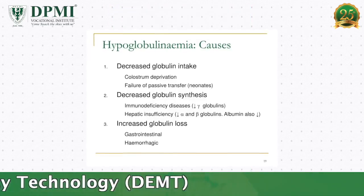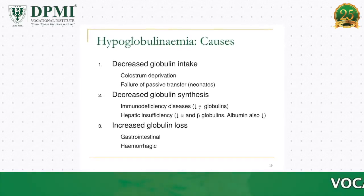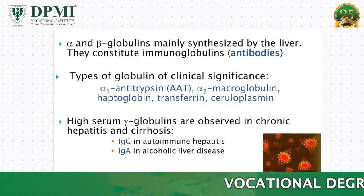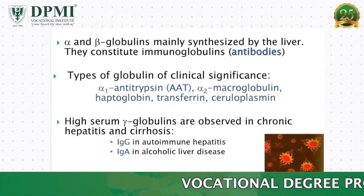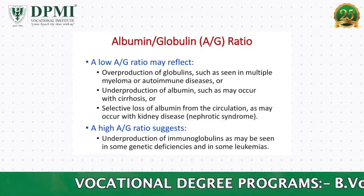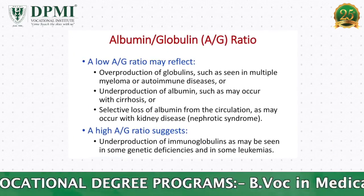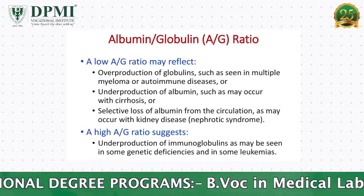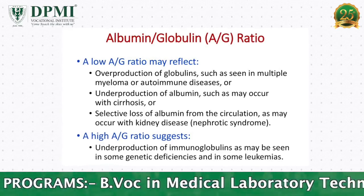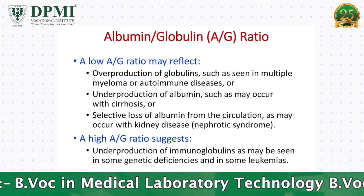Increased globulin level is observed in dehydration, advanced liver disease, multiple myeloma, and chronic infections such as tuberculosis, bacterial endocarditis, etc. The A to G ratio is nearly 1 in dehydration. If the A to G ratio is less than 1, it indicates elevated globulin production if albumin is normal.